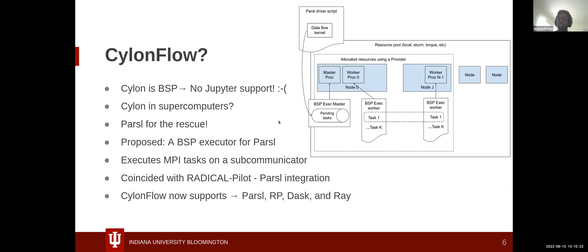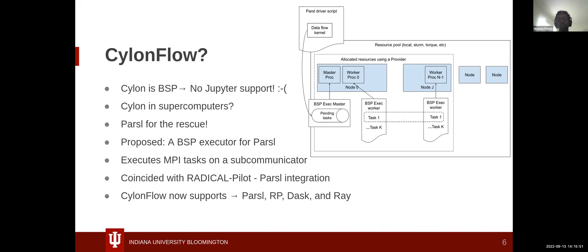Cylon is BSP, and that brings some problems — we can't use Cylon in a Jupyter notebook, and using Cylon in supercomputers is also a challenge. This is where we found Parcel. What we propose for Parcel is a bulk synchronous parallel executor which executes MPI tasks on a sub-communicator. This interestingly coincided with the Radical Pilot and Parcel integration, and we are working very closely with the Radical Pilot team on Cylon Flow and Cylon on supercomputers. Cylon Flow provides this BSP executor and extends the idea into Parcel, Radical Pilot, as well as cloud computing software like Dask and Brick.